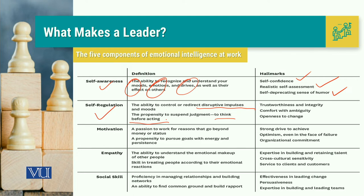The hallmarks of self-regulation are: number one, trustworthiness and integrity. You also have to have comfort with ambiguity, because when you deal with uncertainty avoidance and deal with ambiguity, that is the time when you are able to self-regulate. And you should also be open to change.